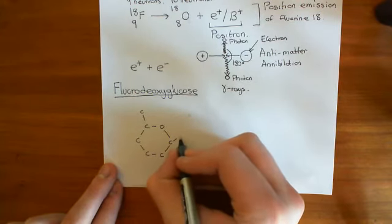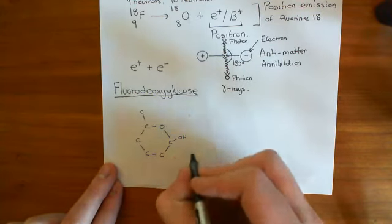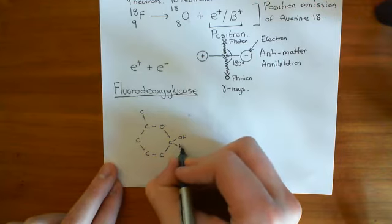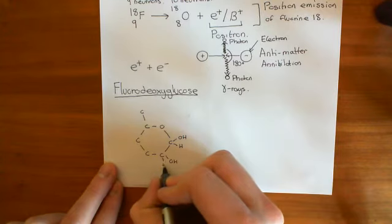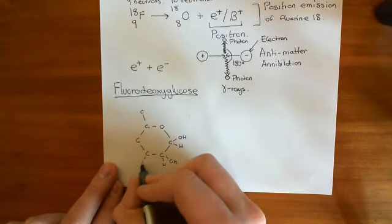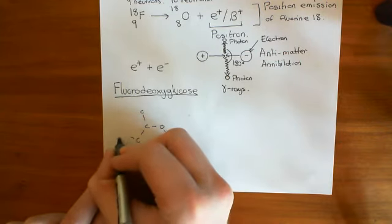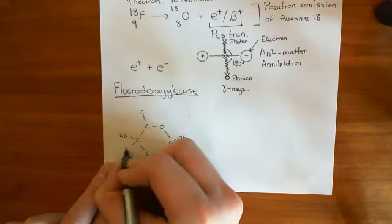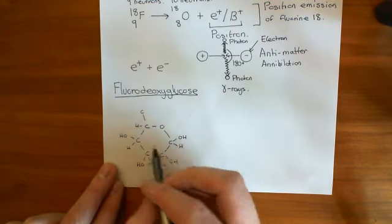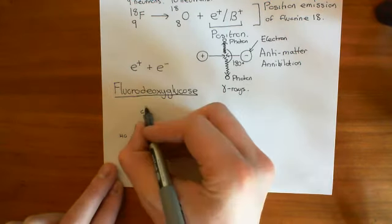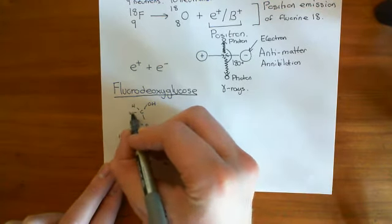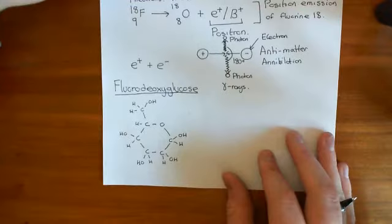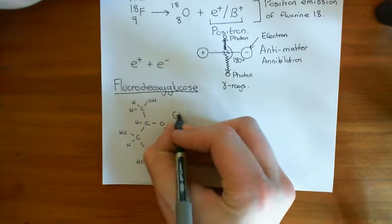So you have a six-membered ring with a final carbon coming off here. Off most of the carbons you have hydroxyl groups: a hydroxyl group and a hydrogen off this carbon, another hydroxyl group and a hydrogen here, another hydroxyl group and a hydrogen here. Off that carbon you just have a hydrogen — no hydroxyl group. And off the sixth carbon you have a hydroxyl group and two hydrogens. So that's roughly the structure of glucose.